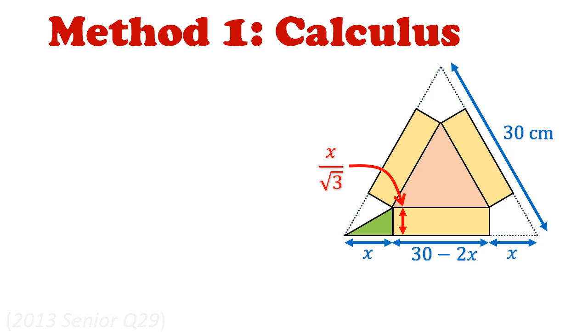Now knowing that the base is an equilateral triangle, we can find the base area using the formula half a, b sine c. That will give us half of (30 minus 2x) squared times sine of 60 degrees, which is square root 3 over 2. This will help us find the volume, which is just base area times the height. When you expand it all out, it simplifies nicely to just a cubic equation, x bracket (15 minus x) close bracket squared.